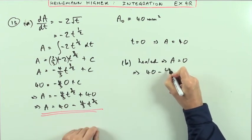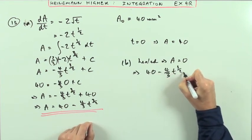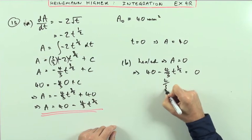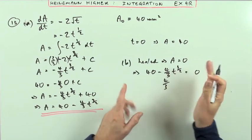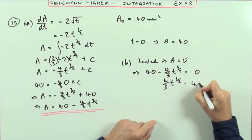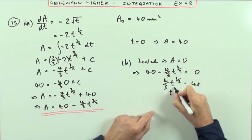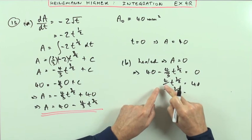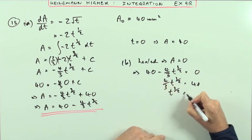Which means 40 - 4/3 t^(3/2) = 0. There's only one mention of t, so I can just solve this linearly. t^(3/2) will equal 40, taking it over and reading backwards. So t^(3/2) will be divided by 4 and multiplied by 3, which is 30.